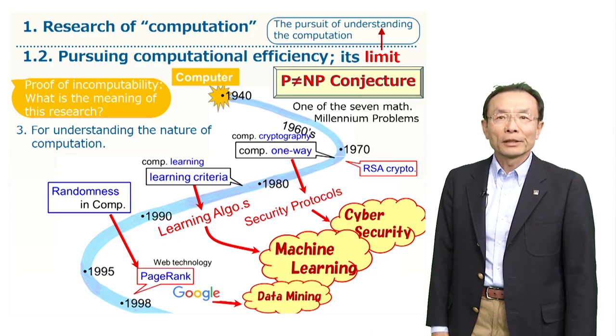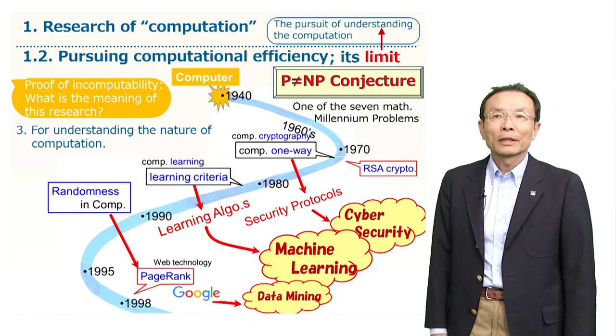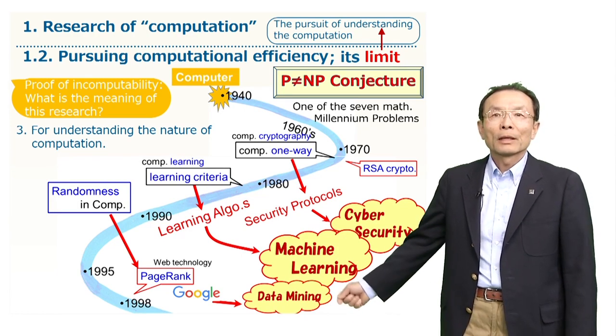In 1990s, the randomness in computation has been studied extensively again in computational complexity theory, which provided some key technologies in statistical algorithms used in the big data analysis, which is now used a lot in data mining.